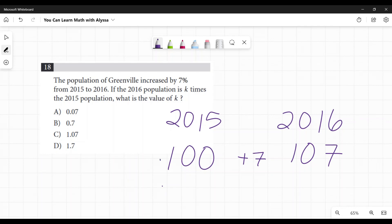Now there's 107 people in 2016. If I multiply a hundred by each of these four things, which one gets me to 107? C, 1.07. That's another way to look at it, especially under the pressure of a test. Sometimes the real numbers can help jog your memory.